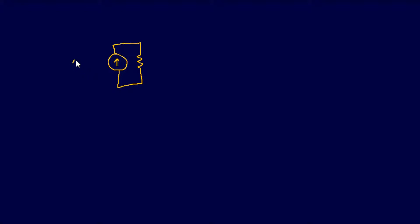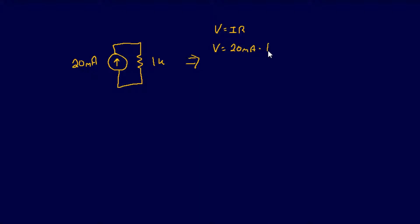For this first problem we'll start off simple — one current source in parallel with a resistor. We'll say the current source is 20 milliamps and the resistor is 1kΩ. We want to convert this Norton configuration to a Thevenin equivalent. Using Ohm's law: V equals I times R, so V equals 20 milliamps times 1kΩ, which gives us a voltage source of 20 volts, with our resistance of 1kΩ.